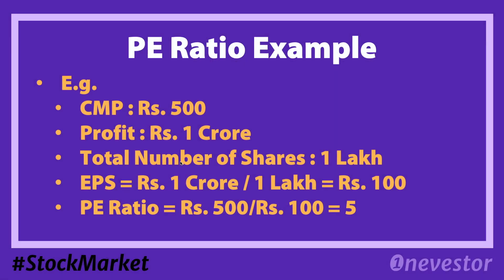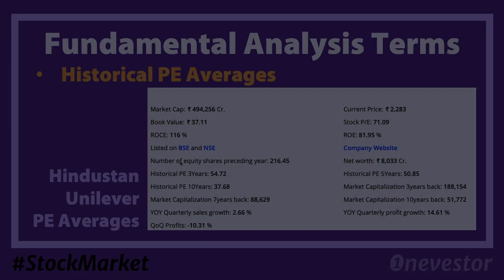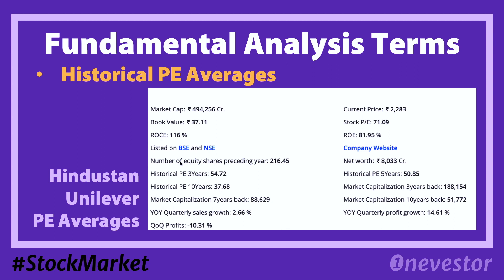Suppose a stock's market price is 50 rupees. That company has an annual net profit divided by total number of shares — that is 1 crore divided by 1 lakh, which equals 100 rupees EPS. Current market price is 50 rupees, earnings per share is 100 rupees. PE ratio equals current market price divided by earnings per share — that is 50 divided by 100, which is 0.5 times. That company's PE ratio is 0.5.